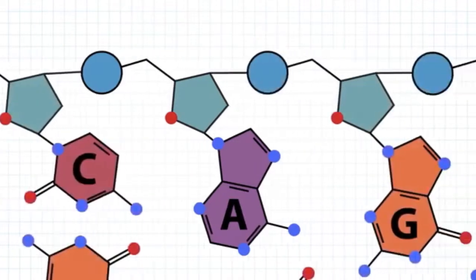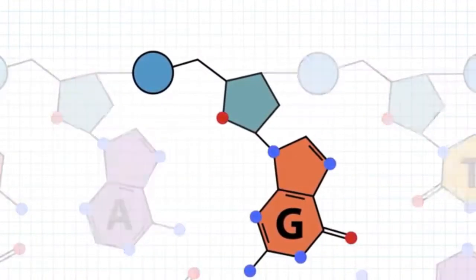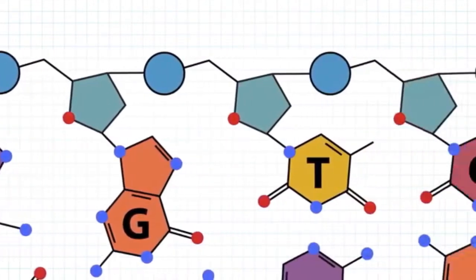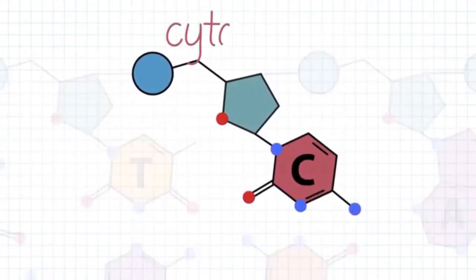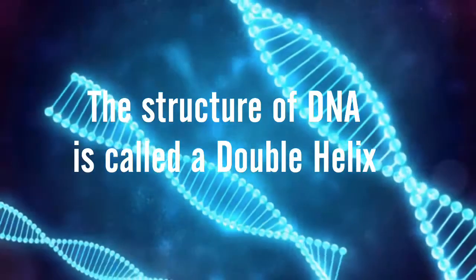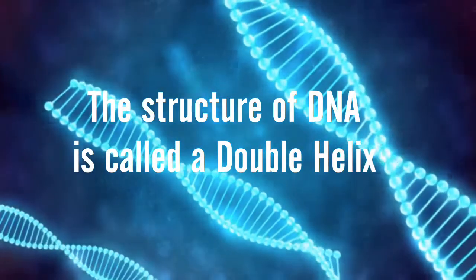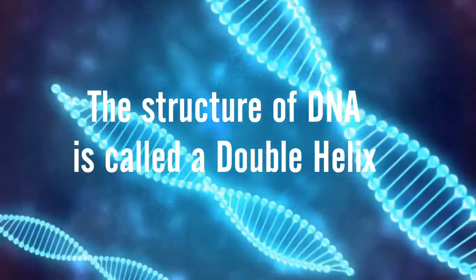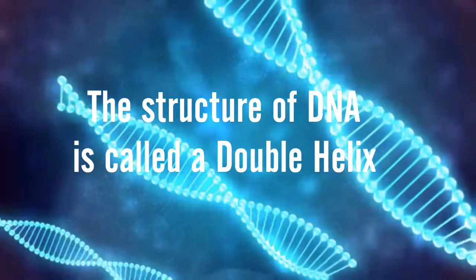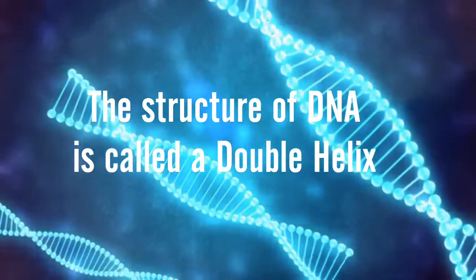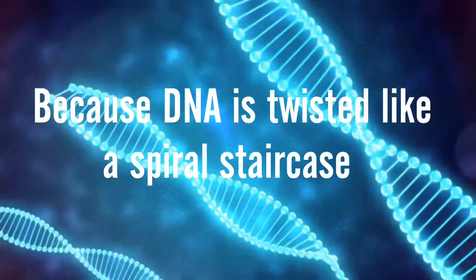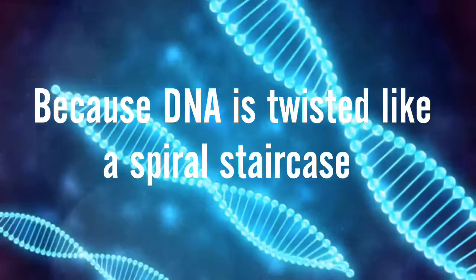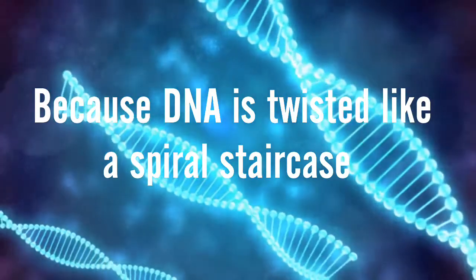The four nitrogenous bases are adenine, guanine, thymine, and cytosine. The structure of DNA is called a double helix, because DNA is twisted like a spiral staircase.